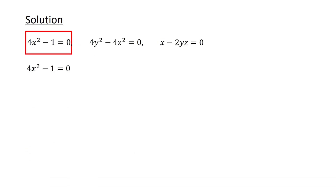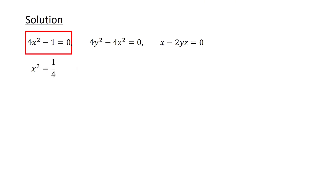For the equation 4x squared minus 1 equals 0, we add 1 to both sides to get 4x squared equals 1. Then divide by 4 to get x squared equals one quarter. And lastly, taking the square root, we obtain x equals one half or x equals minus one half.